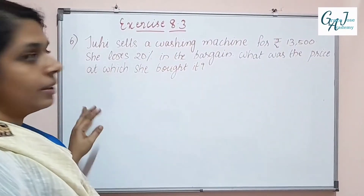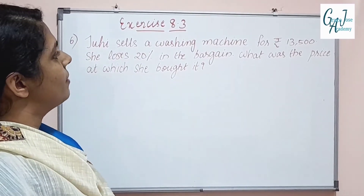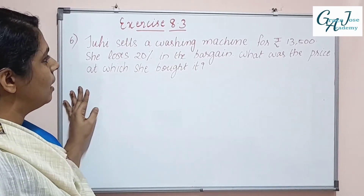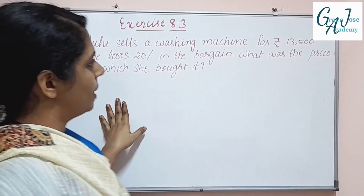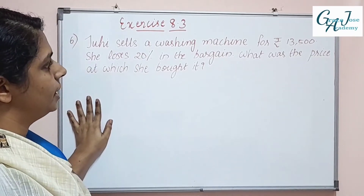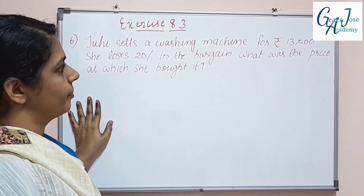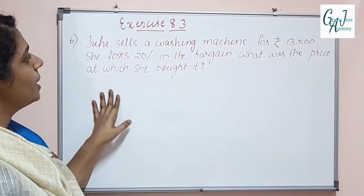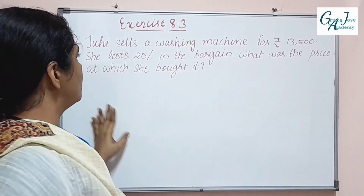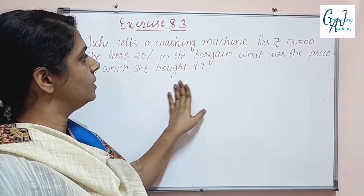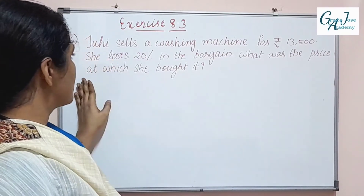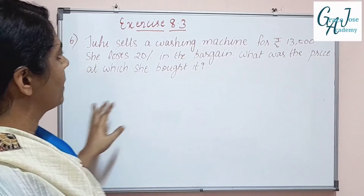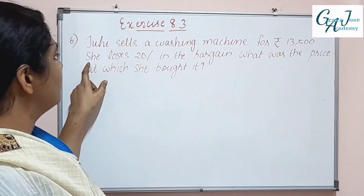Next is the sixth question. Juhi sells a washing machine for Rs. 13,500. She loses 20% in the bargain. What was the price at which she bought it?